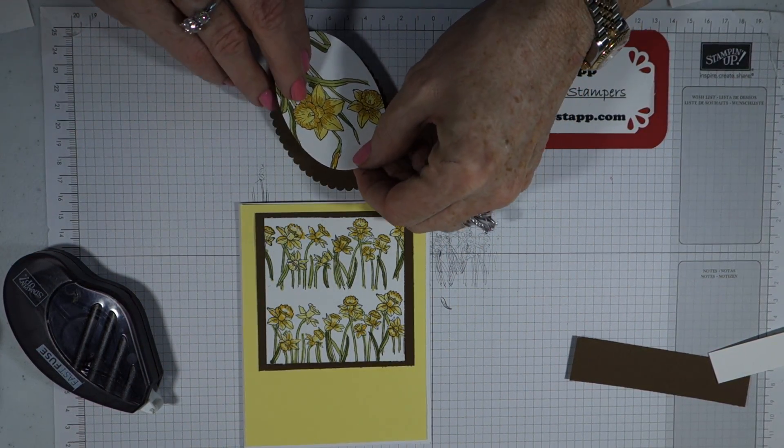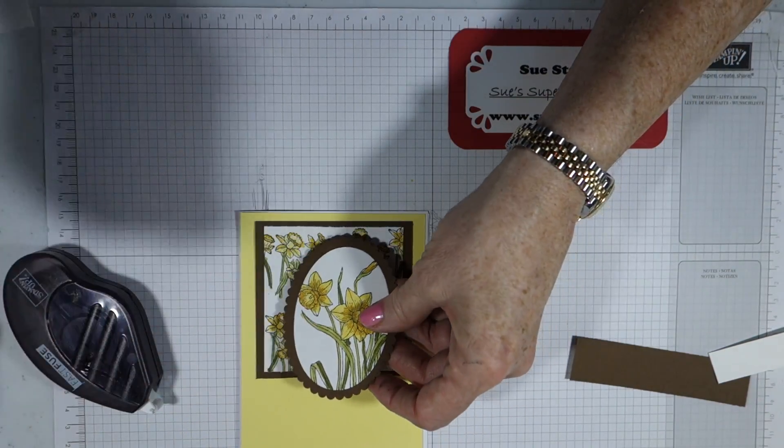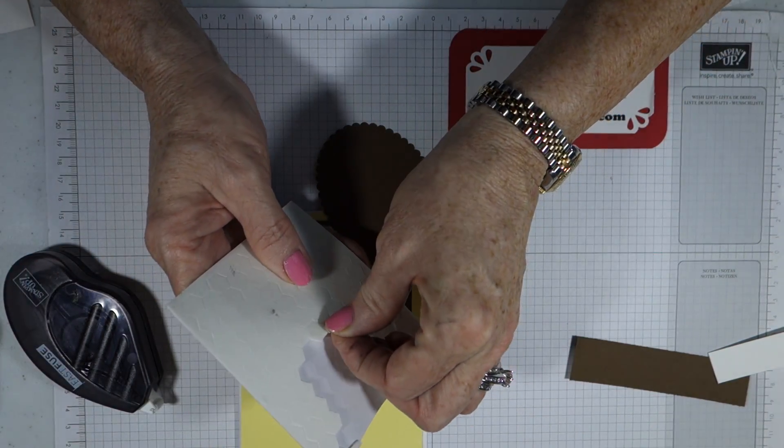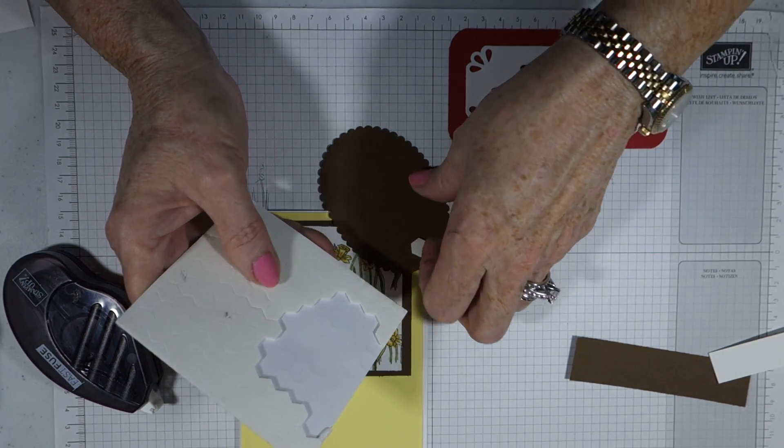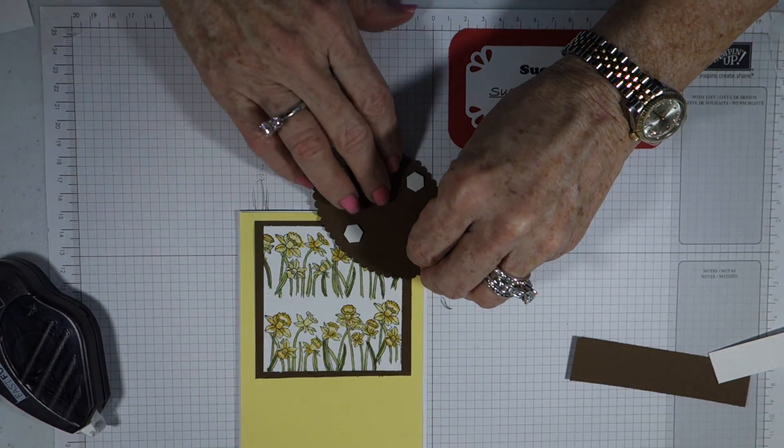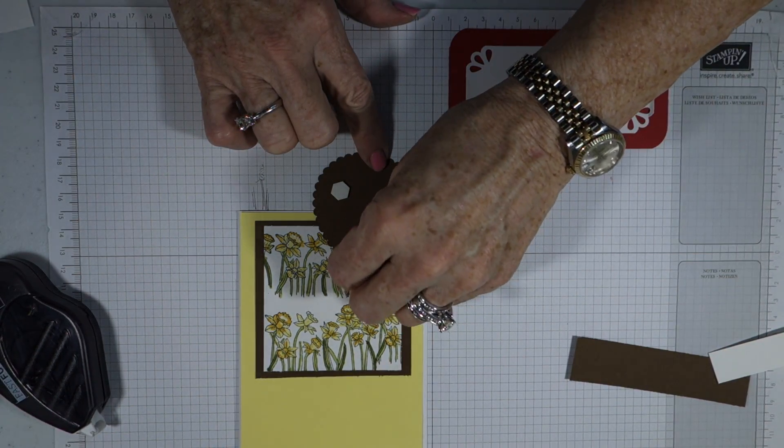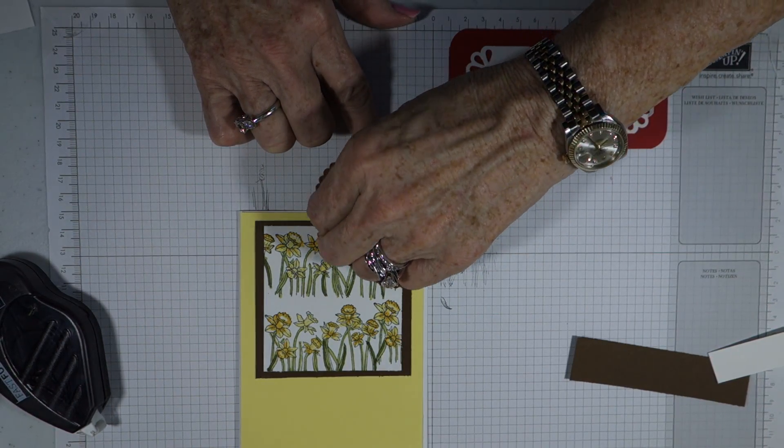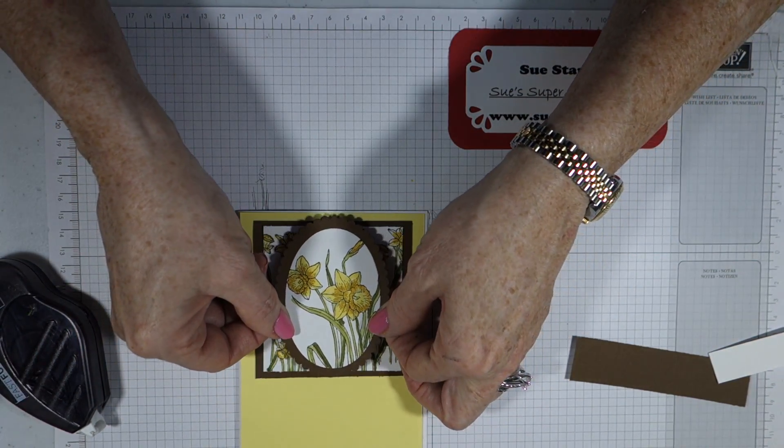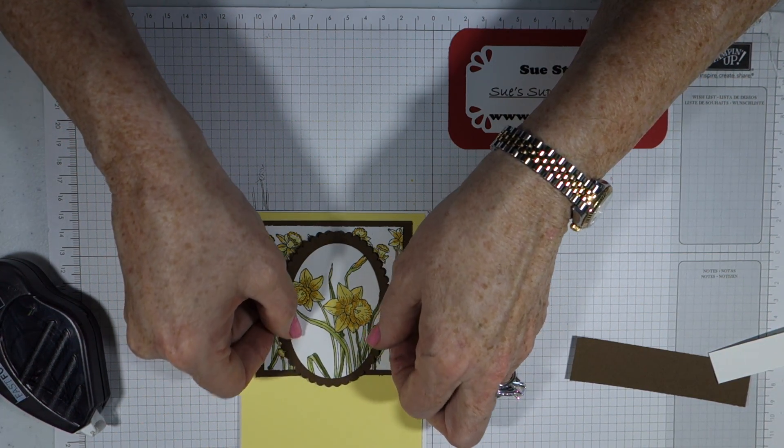And then we're going to use our dimensionals to give it some height on the card. Dimensionals is our 3D adhesive dots, and they look like this. This is going to have quite a bit of area here, so I am going to use four of the dimensionals on this one. And the tops come off very easily. I use the dimensionals for height variation on just about all my cards. And I'm not going to center this—you could if you want, but I like it down a little bit so that it looks like the top is kind of peeping through.